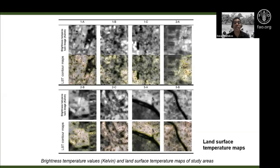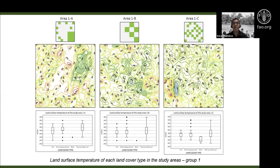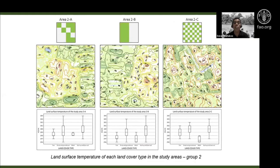We produced land surface temperature maps by taking temperature values and converting them into surface temperature maps of the study areas, then overlaying them together. This shows the temperature characteristics of each land cover type — trees, shrubs, ground cover, water, and built-up — in each group. The first group is highly urbanized, and the second group is more farmland, showing the characteristic temperature range for each cover type.